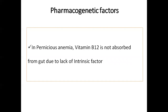Next is pharmacogenetic factors. Certain genetic factors may influence drug absorption. A classical example is pernicious anemia, where vitamin B12 is not absorbed in the gut due to a lack of intrinsic factor. The intrinsic factor is responsible for vitamin B12 absorption in the gut, but in pernicious anemia patients, their genes lack intrinsic factor, so vitamin B12 is not absorbed.